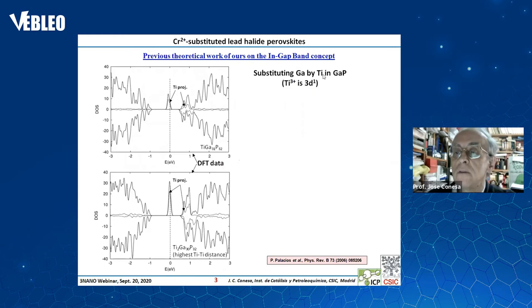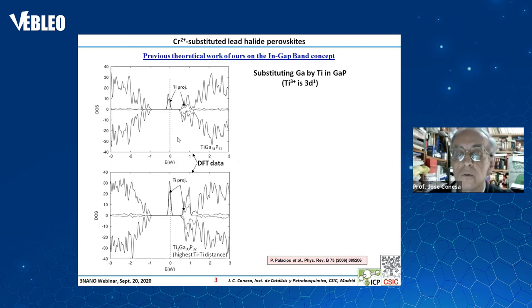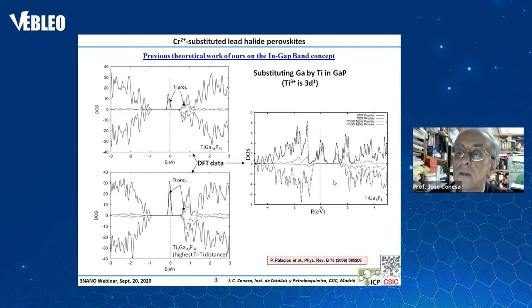Substituting gallium by titanium in gallium phosphide allows you to obtain an ingap band. This is the Fermi level, and when you substitute gallium by titanium in gallium phosphide, it is possible to see that you can have a partially filled intermediate band or ingap band. This was published more than 10 years ago.